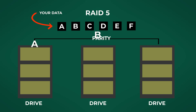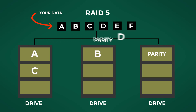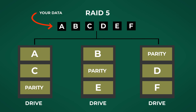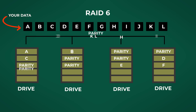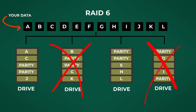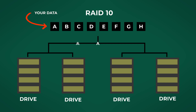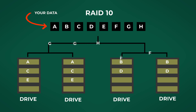RAID 5 requires at least three discs and stripes data across all of the discs with a parity disc, which means it can tolerate one drive failure. Because of this, you lose the capacity of one drive since that portion is dedicated as parity. RAID 6 requires at least four drives and operates similarly to RAID 5, but can tolerate two hard drive failures, reducing the overall capacity by two drives.